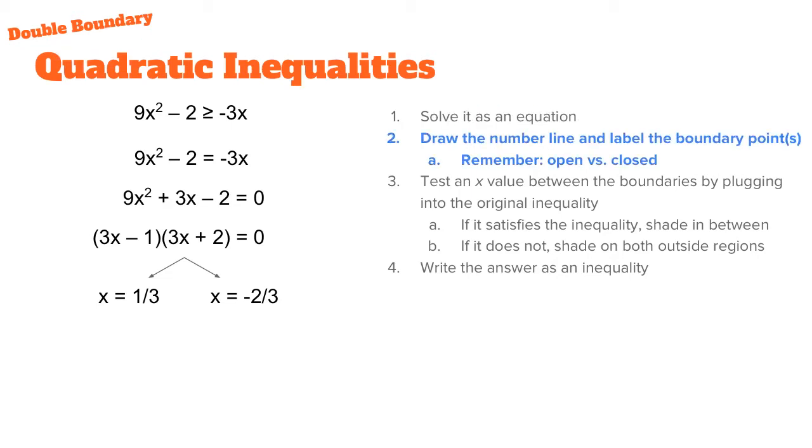The next part is going to be to draw the number line and label those boundary points. So here we have our number line. And so I've changed it so we have zero and we have negative 1 and 1 to give us a little bit of space to be able to show the boundaries of 1/3 and negative 2/3.